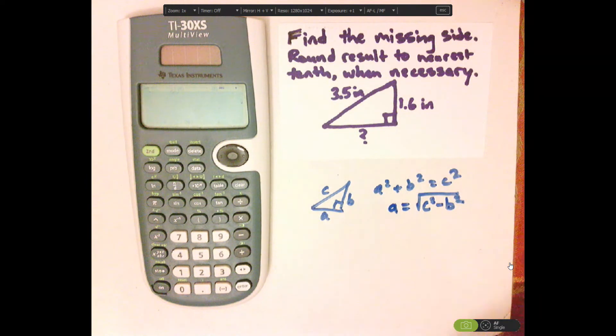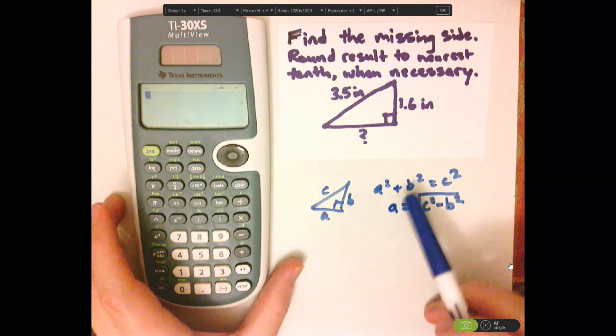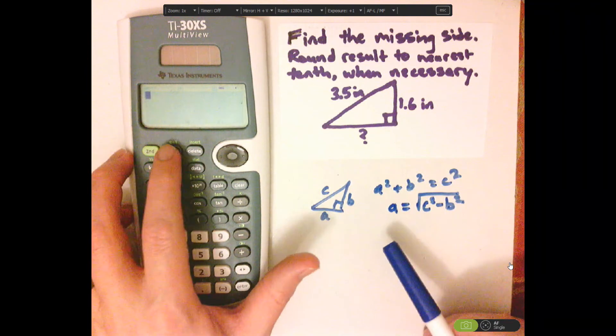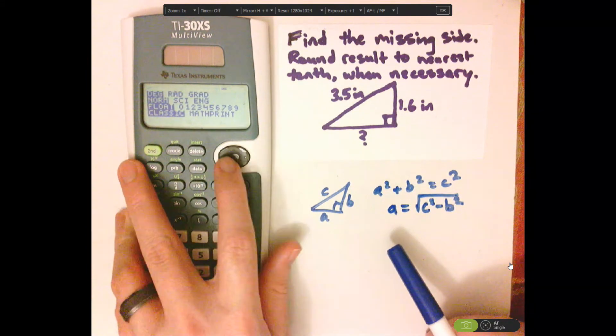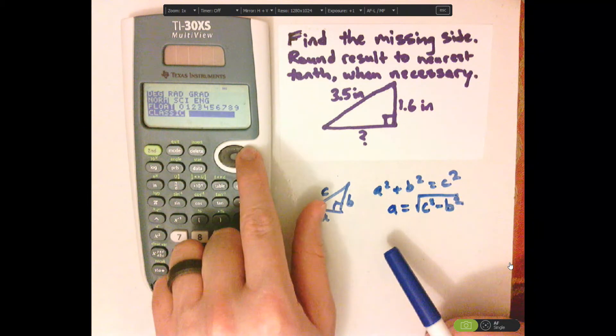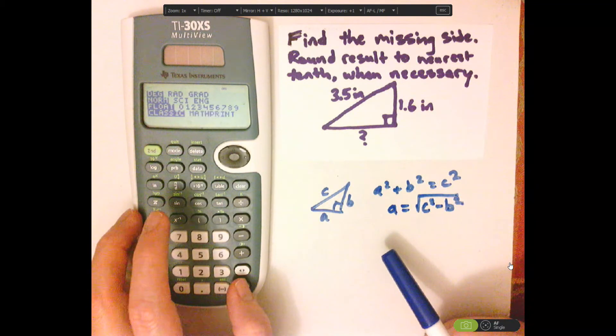I could type that in all at once, and since I want it underneath the radical, put it in math print. So mode, click down, arrow, enter, now that's selected.